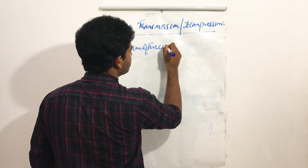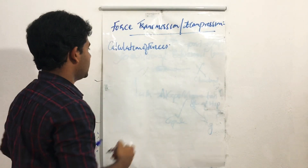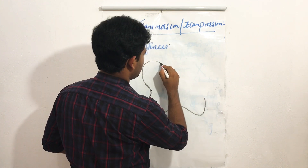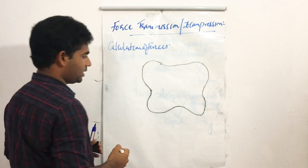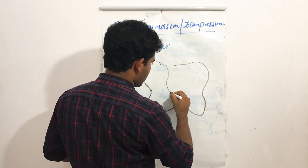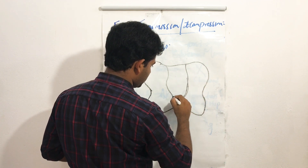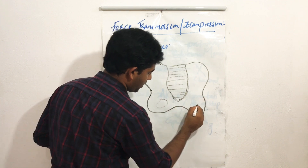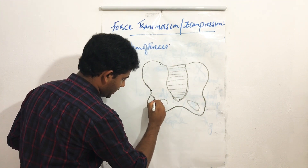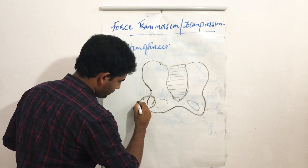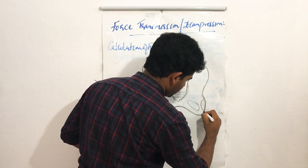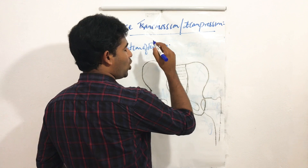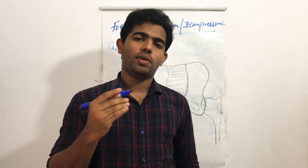Now we move on to calculation of forces. Just imagine this is your hip. If you draw along with me, here you have your sacroiliac joint, the sacrum, the ischiopubis, the obturator foramen, and the head of the femur attached like this on both sides.